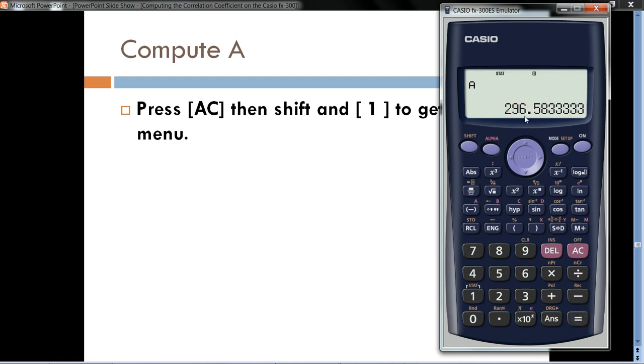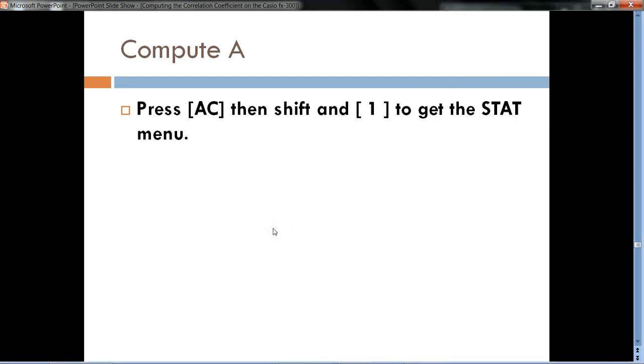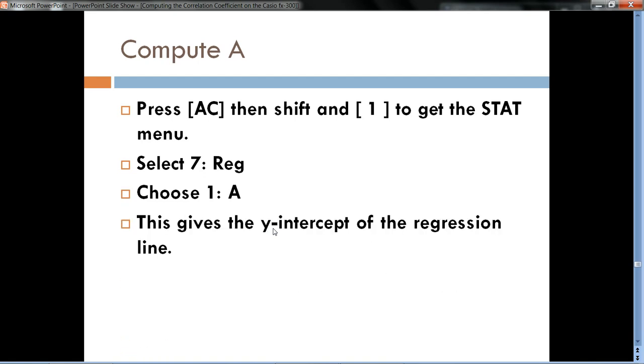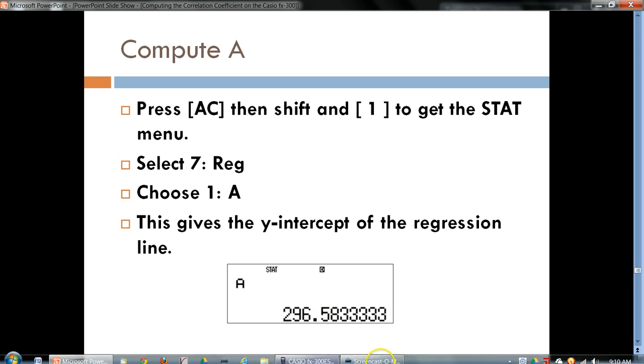So, there's our y-intercept, 296.583 rounded to three decimal places. So, we hit Reg. We chose 1 for A. And then, there is our y-intercept, the A part of the linear regression equation.